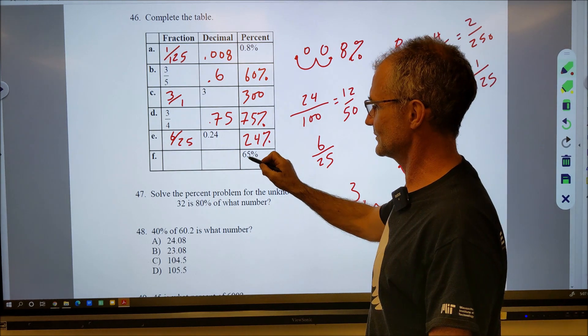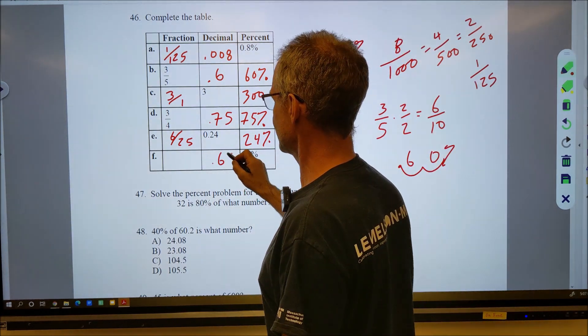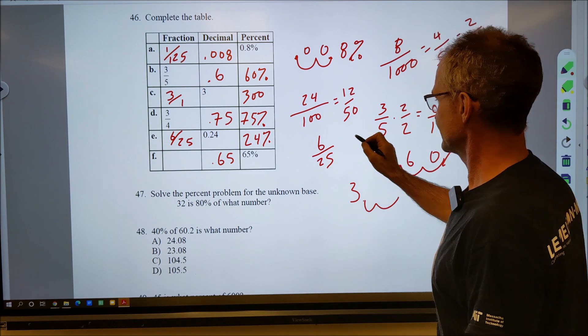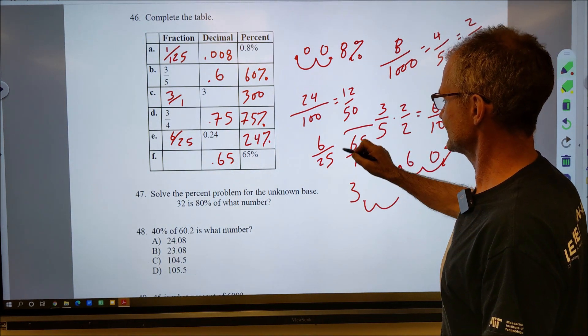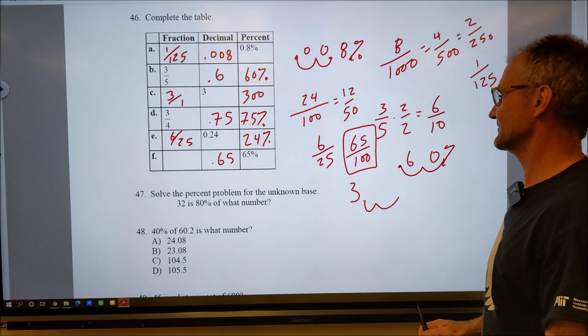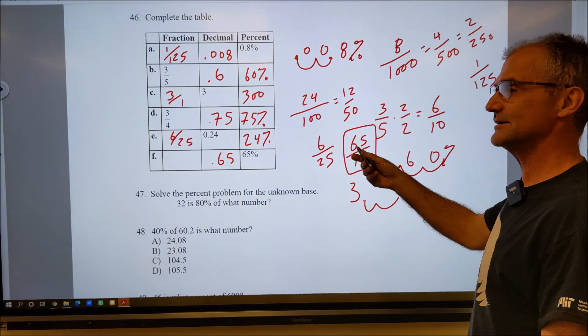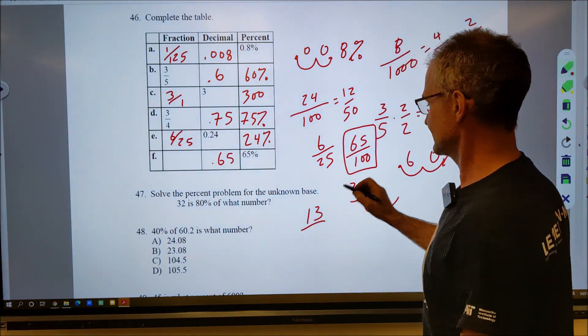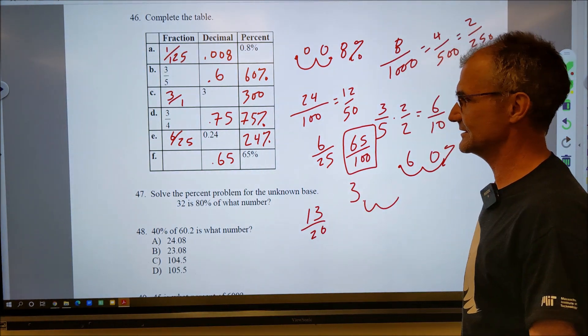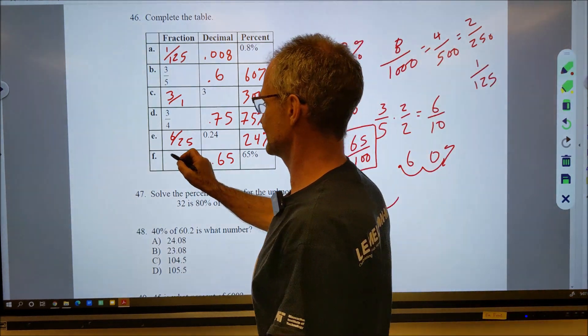65%. I'm going to go over 1, 2 to get 0.65. Then as a fraction, a little bit out of room here, I got 65 one-hundredths. Both these numbers here are divisible by 5. 5 will go in there, about 50 would be 10, 13 times, and into there 20 times. So that'd be 13 twentieths as a reduced fraction.